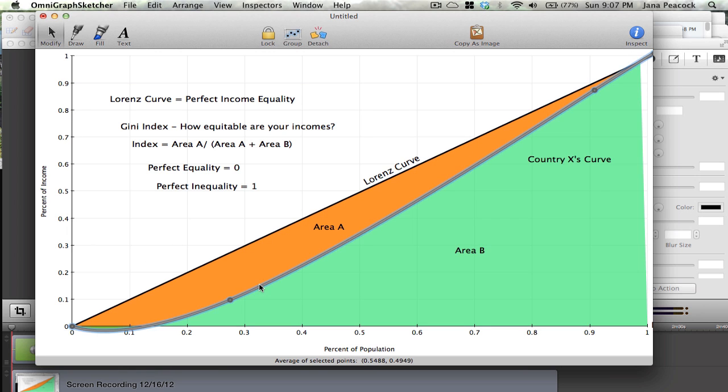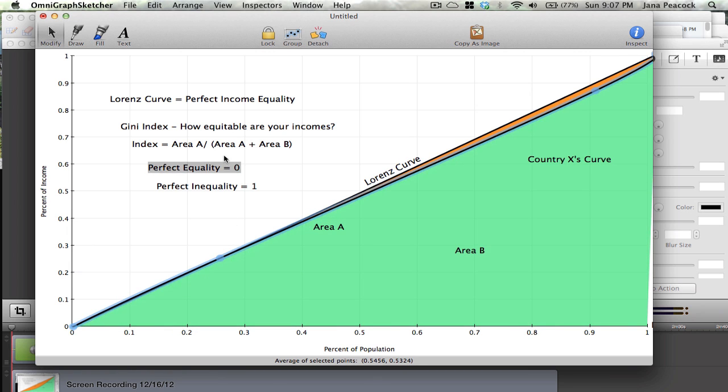If you had a perfectly equal area, the Lawrence Curve scenario, area A is going to be equal to 0, which would be over area A, 0 plus 0, 100. Then 0 over 0 plus 100 would of course give you 0, so that would be perfect equality.